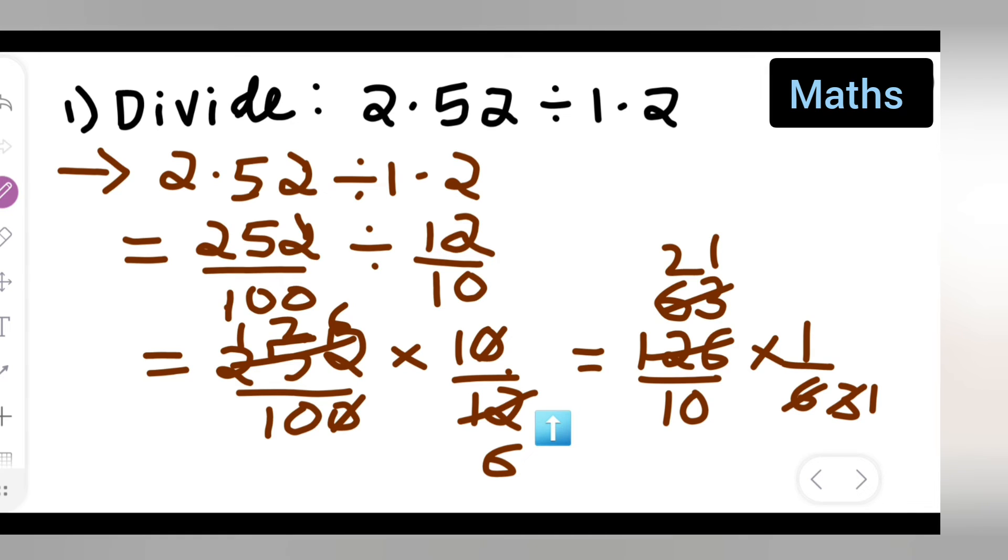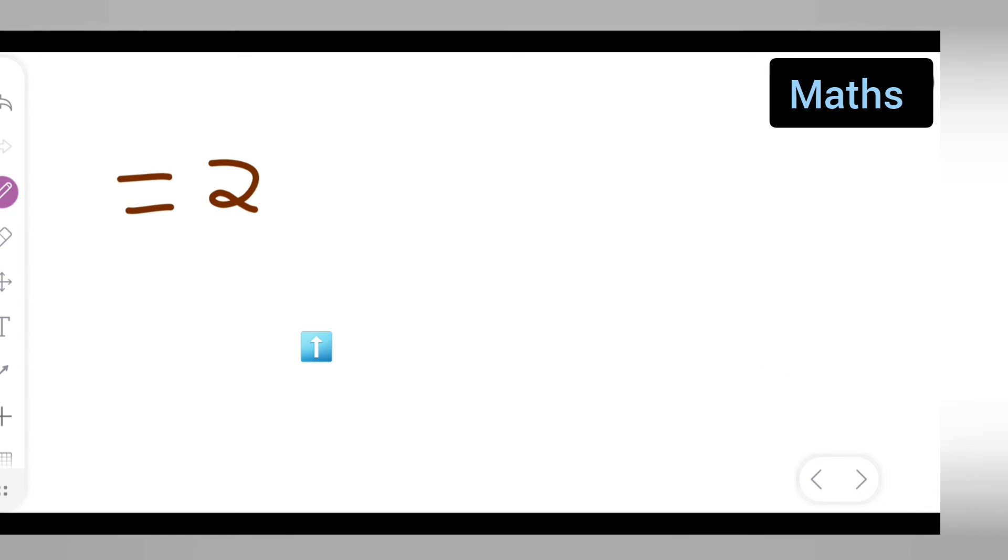So what is your answer? 21 upon 10. Now this is equal to what? You'll have to write 2.1. 2.1 is your answer.